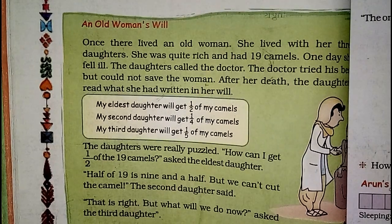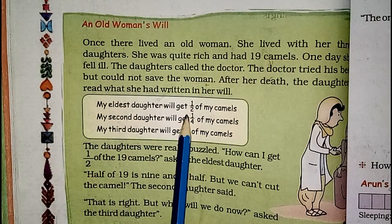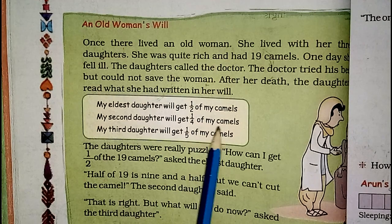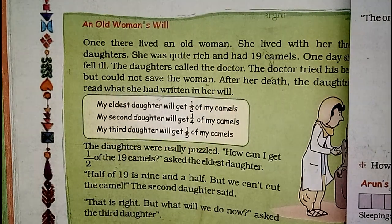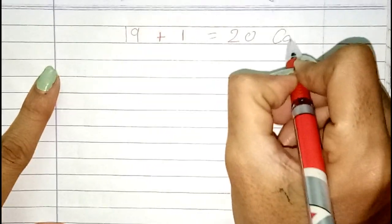At that time, their aunt came to help. Their aunt said, 'Take my one camel.' So there were 19 camels and their aunt gave one more. 19 plus 1 — now they have 20 camels total. Now let's see how the daughters distribute the camels among each other.